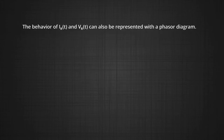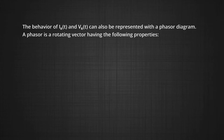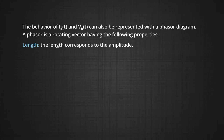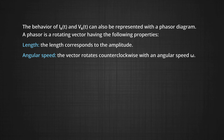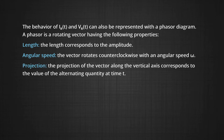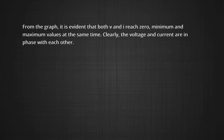The behavior of I_R and V_R can also be represented with a phasor diagram. The phasor is a rotating vector with the following properties: its length corresponds to the amplitude; the vector rotates counter-clockwise with angular speed omega; and the projection of the vector along the vertical axis corresponds to the value of the alternating quantity at time t. It is evident that both V and I reach their minimum and maximum values at the same time — clearly, voltage and current are in phase with each other.